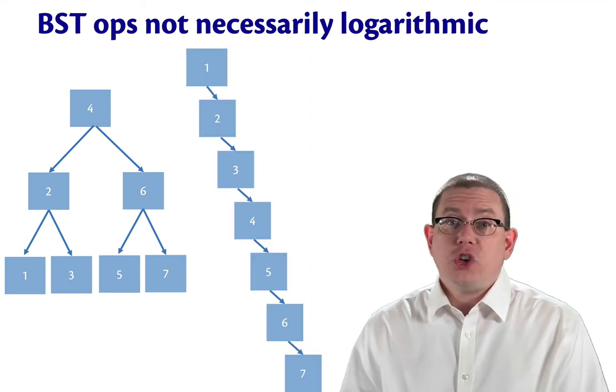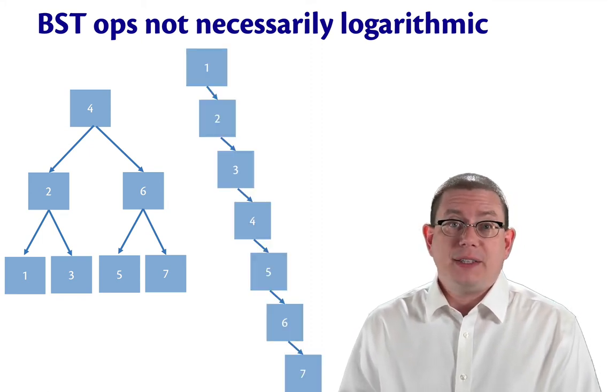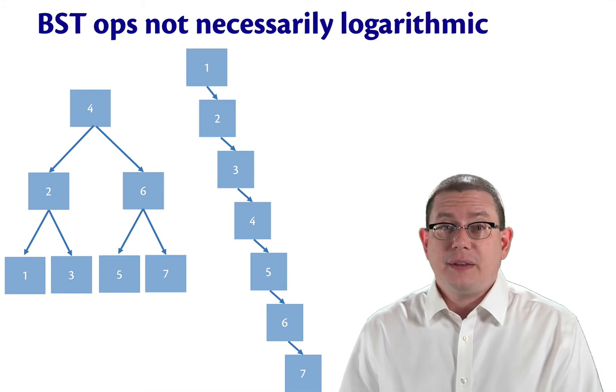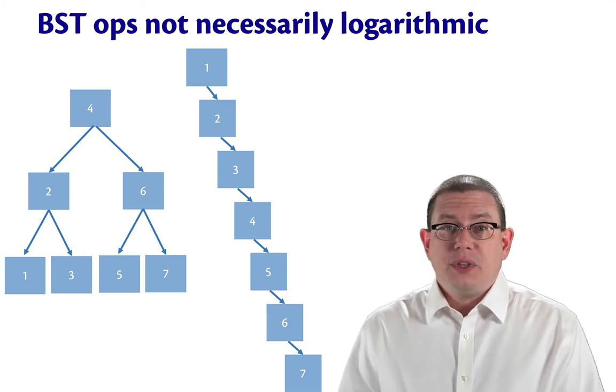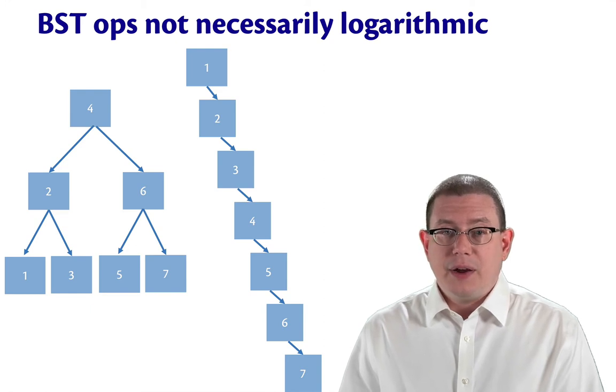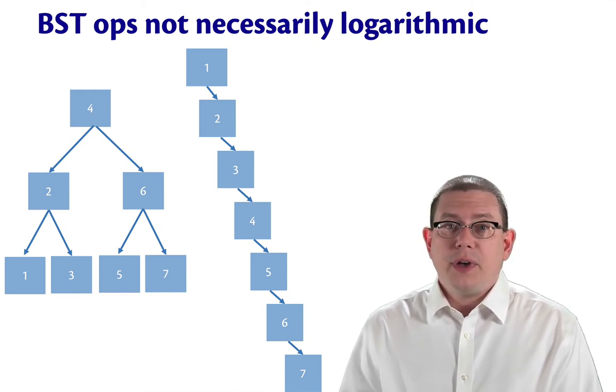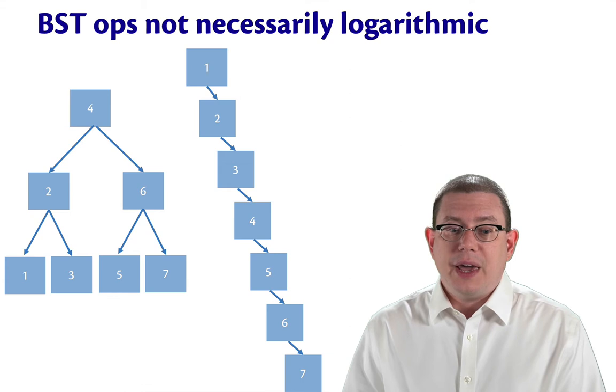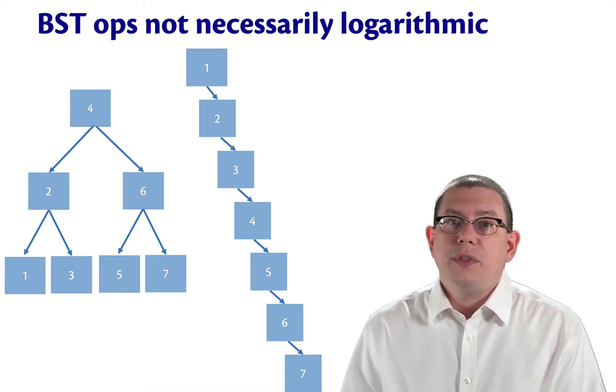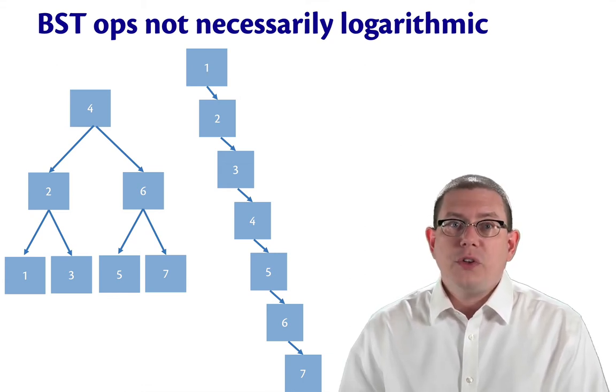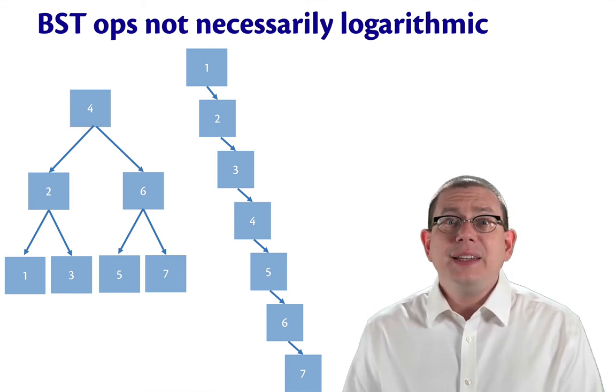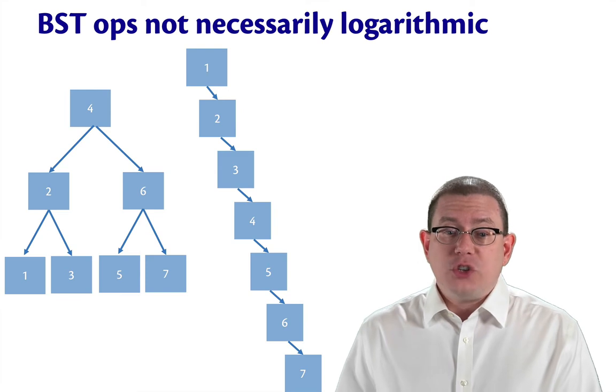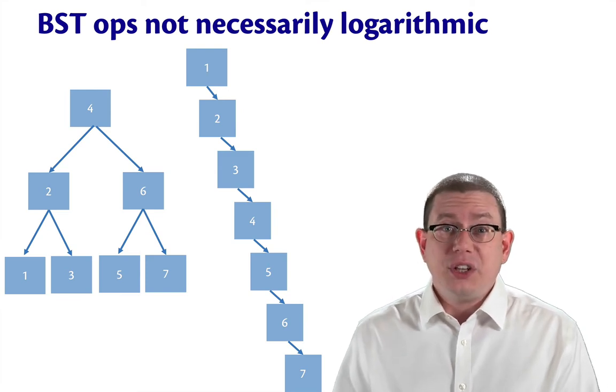But there are other shapes that that tree could have and still represent the same set. In fact, this second tree that I've drawn here still satisfies the BST invariant. But if you want to find out whether 7 is an element in that tree, you have to look through all of the nodes in the tree rather than just following one short path down the tree. In fact, this tree has degenerated to essentially being just a linked list.